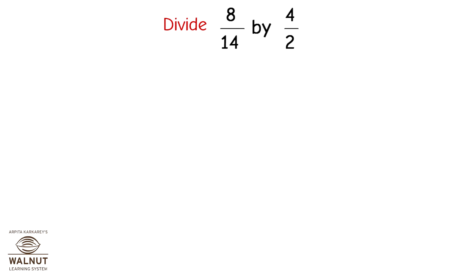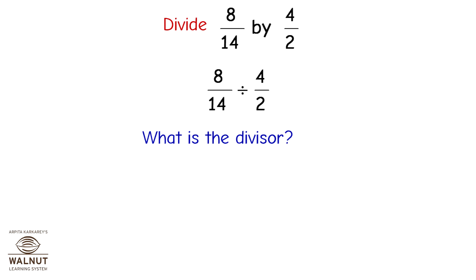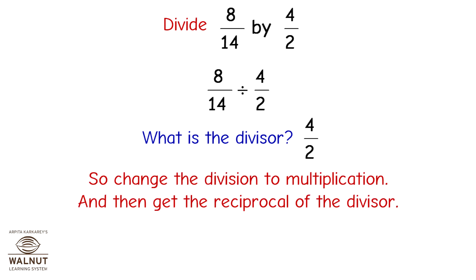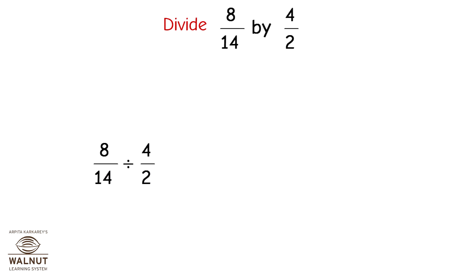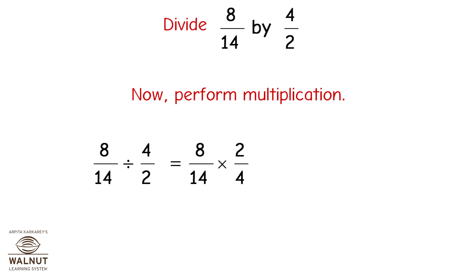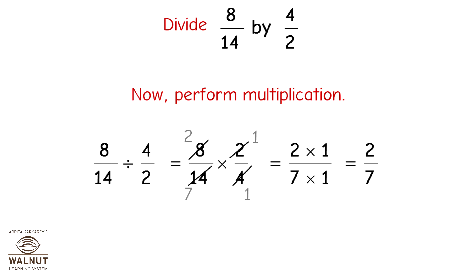Divide 8/14 by 4/2. The divisor is 4/2, so change the division to multiplication and take the reciprocal of the divisor, which becomes 2/4. Now perform multiplication: 8/14 × 2/4 = (2×1)/(7×1) = 2/7.